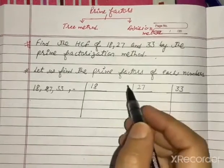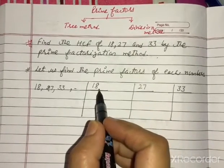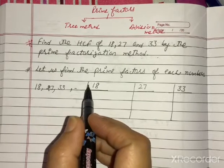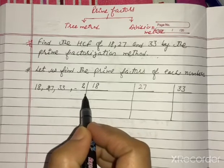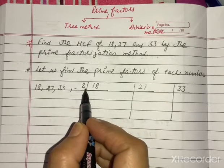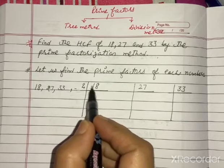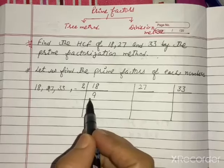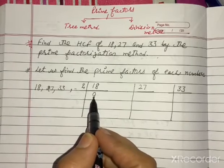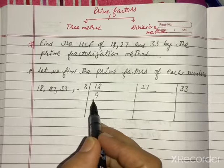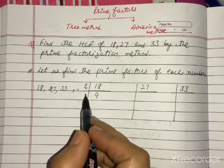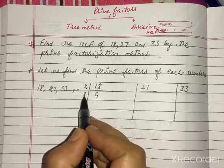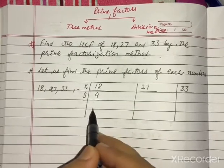So how do we do the division method? Take 18. We always start with the smallest prime, which is 2. We check where 18 appears in the table of 2 — we know 2 nines are 18. But 9 never comes in the table of 2, so the next number we try is 3.